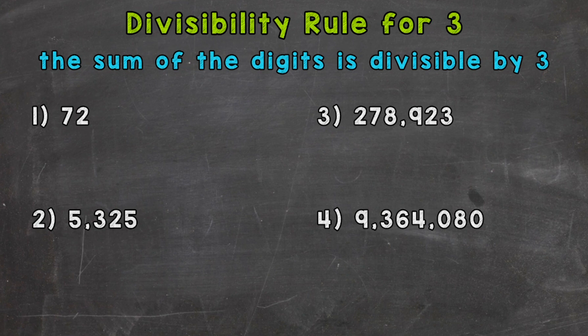Let's jump into number 1 here where we have 72. We need to find the sum of the digits. That means we do 7 plus 2, which gives us 9.